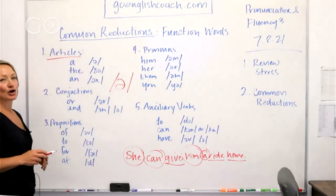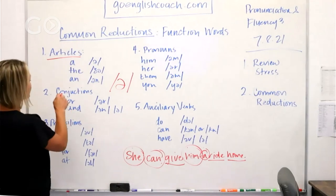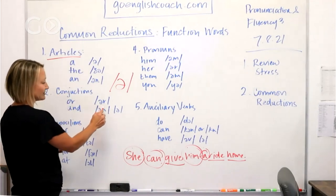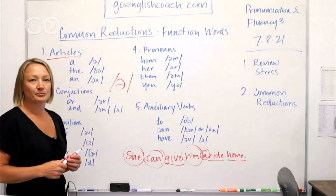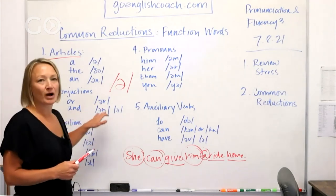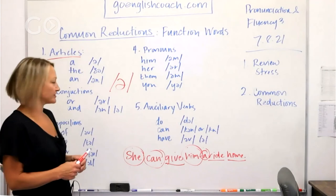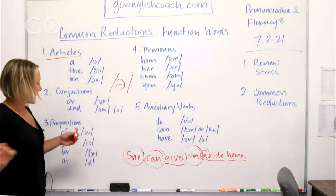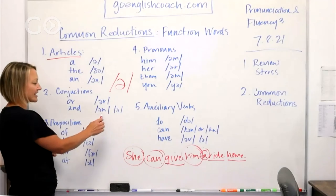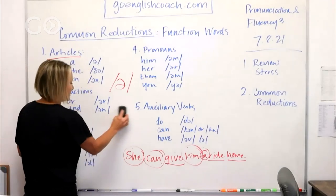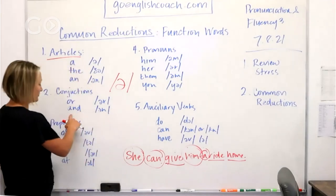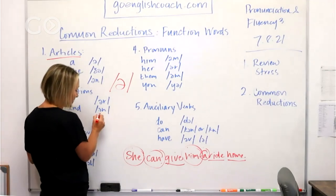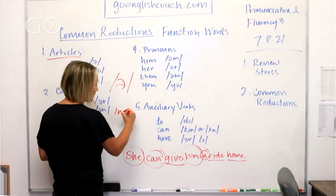So we're going to reduce words like articles. We're going to reduce conjunctions: or and. We're going to say er, okay? Er, black or white, black or white. And is a conjunction, we're just going to say and. So black and white, black and white. All you actually really hear is this very small in, or it could just simply be an end sound.